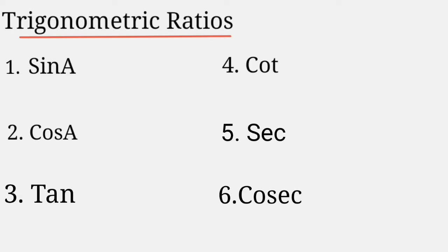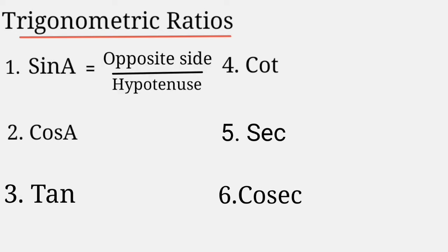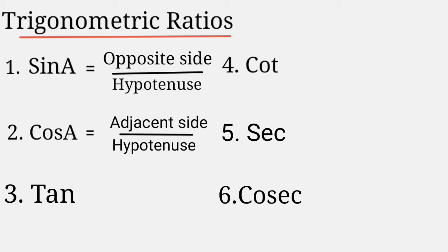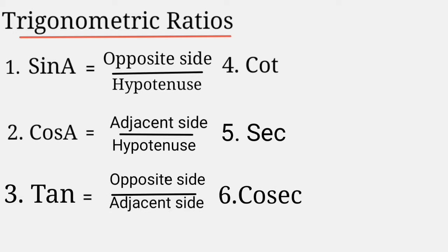Let us take a triangle ABC. Angle A is equal to theta and angle B is equal to 90 degrees. Then sin theta is equal to opposite side to theta by hypotenuse. Cos theta is equal to adjacent side to theta by hypotenuse. And tan theta is equal to opposite side to theta by adjacent side to theta.